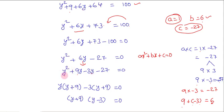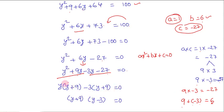The quadratic equation becomes y² + 9y - 3y - 27 = 0. We have four terms, grouped as two pairs. From the first group we take y as common: y(y + 9). From the second group we take -3 as common: -3(y + 9). So the equation becomes (y + 9)(y - 3) = 0.